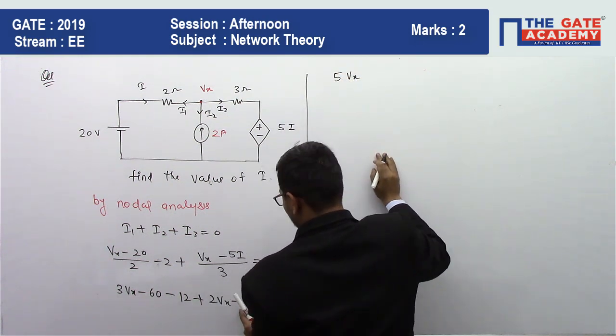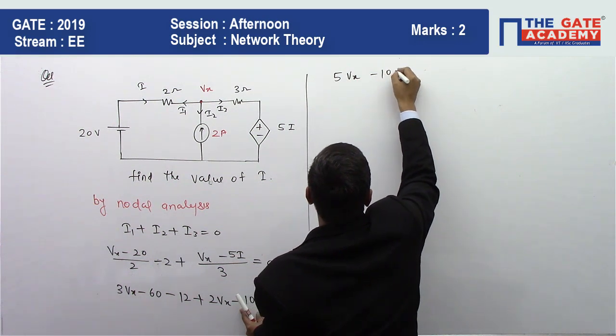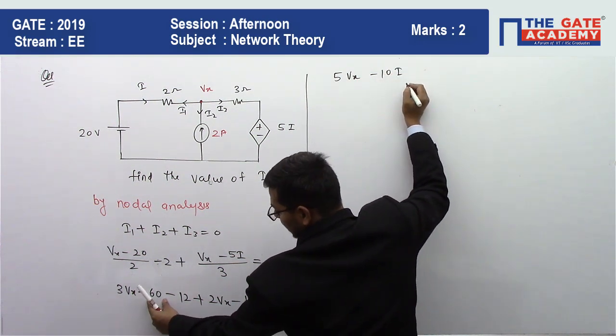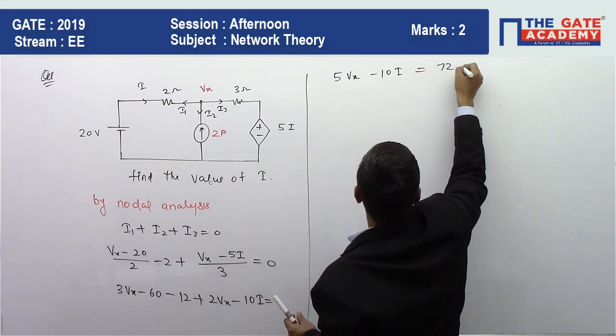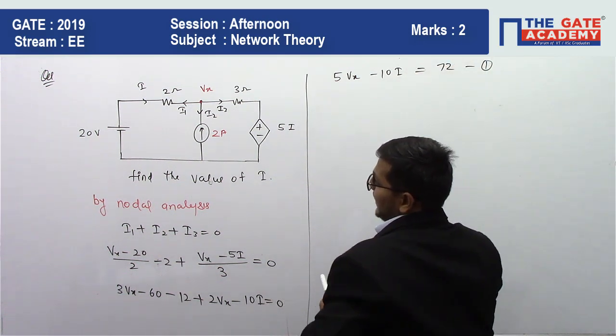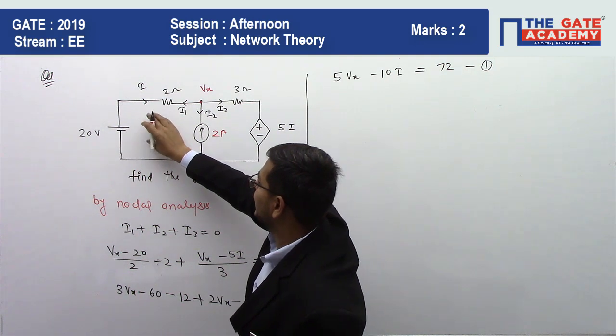Minus 10I, and 60 plus 12 equals 72. This is my equation number 1. We can get from here...